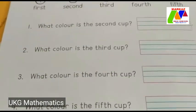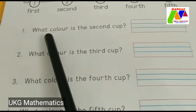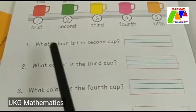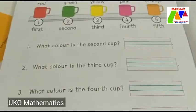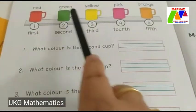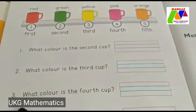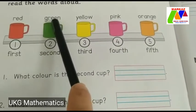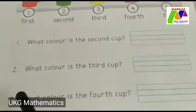Here we can see some questions. All of you answer the questions. What color is the second cup? Which color is this? Yes, green. So children, write here green. What is the spelling of green, children? G-R-E-E-N. Write here green.